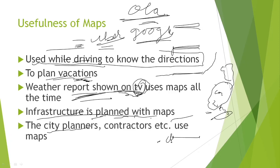The uses of maps are: first, maps are used while driving to find directions; number two, to plan vacations; number three, weather reports shown on TV use maps; number four, infrastructure is planned with maps; and city planners, contractors, etc. use maps.